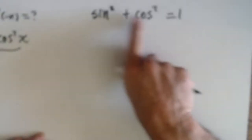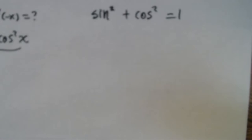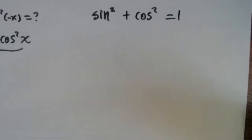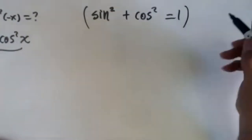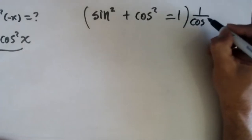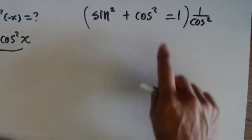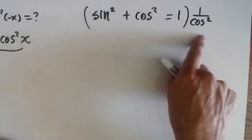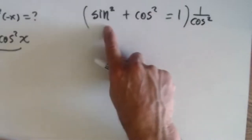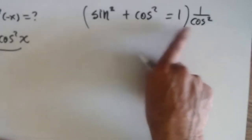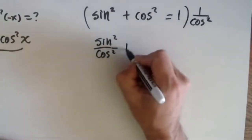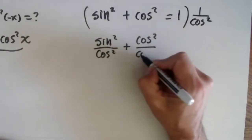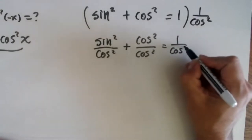Remember that the fundamental identity is sine squared plus cosine squared equals one — with any variable it's going to work fine. What I'm going to do is divide all of this identity by cosine squared. So I distribute this: sine squared over cosine squared plus cosine squared over cosine squared equals one over cosine squared.